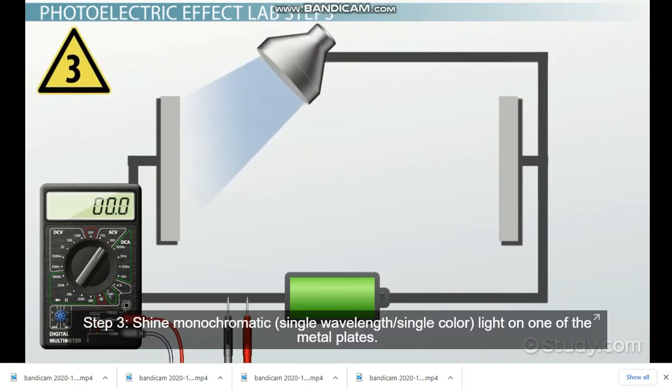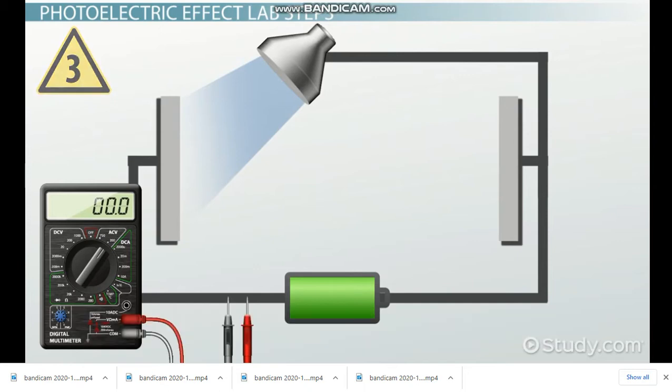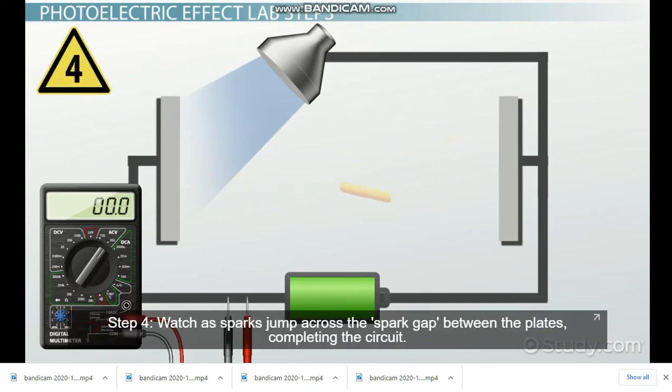Step 3: Shine a monochromatic or single wavelength, single color light on one of the metal plates. Step 4: Watch the sparks jump across the spark gap between the plates, completing the circuit.